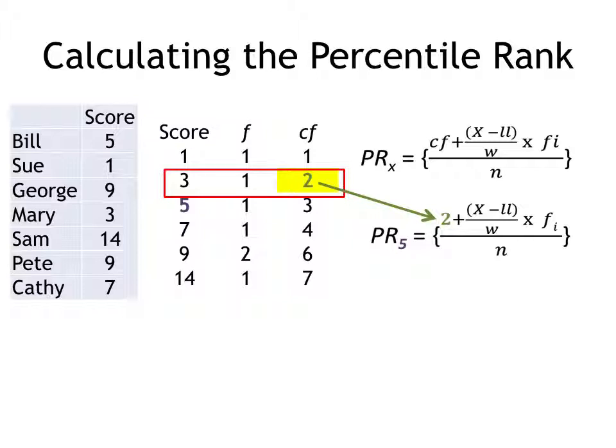First, we put in the cumulative frequency of the scores below the interval with our score of five. I go back to a score of three, and at that point, two of the scores have been accounted for.